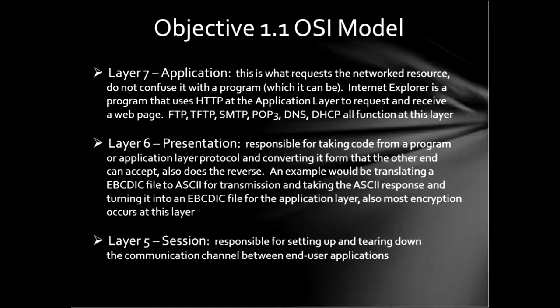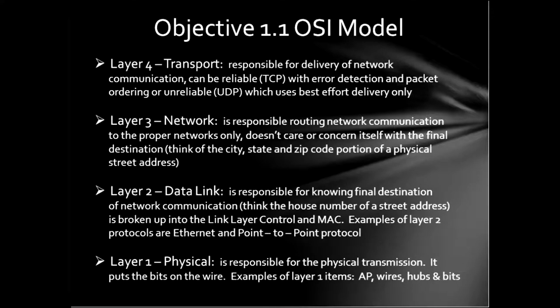Layer five is responsible for setting up and tearing down the communications channels — basically when and where the communication is going to take place. Layer four is responsible for delivery of network communications. It can be reliable, which is TCP with error detection and packet ordering, or it can be unreliable, which is UDP, which uses best-effort delivery only.